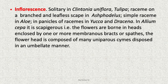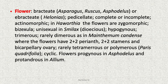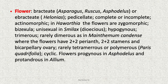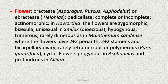The flower head is composed of many uniparous cymes disposed in an umbellate manner. Flowers are bracteate in Asparagus, Ruscus, and Asphodelus, or ebracteate in Helonia; pedicellate; complete or incomplete; actinomorphic — in Haworthia the flowers are zygomorphic; bisexual, or unisexual in Smilax. If unisexual, they are dioecious, that is present on different plants. Then hypogynous, trimerous, rarely dimerous as in Maianthemum canadense where flowers have 2+2 perianth, 2+2 stamens and bicarpellary ovary; rarely tetramerous or polymerous, for example Paris quadrifolia; and cyclic.